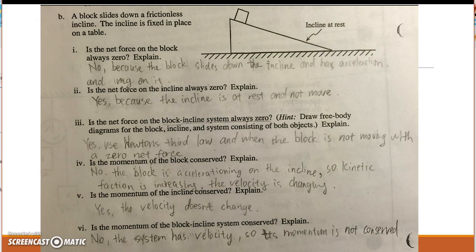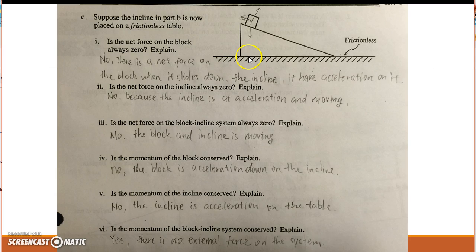The momentum of the incline is conserved because its velocity does not change. The momentum of the block and incline system is not conserved because the system has a net velocity. The net force on the block is not always zero because there is a net force on the block when it slides down the incline, giving it acceleration.